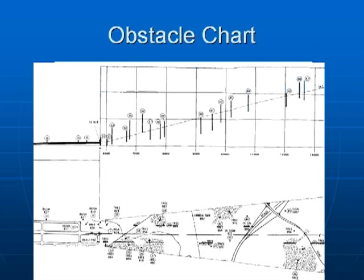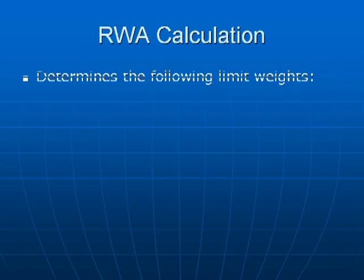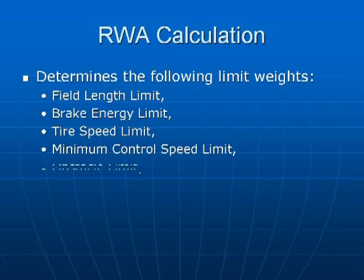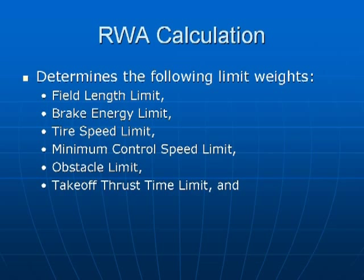The obstacle information and runway information discussed are just some of the sources constituting the database used in a runway analysis. Once the aircraft performance is collected and put into our performance program and the airport and runway information is inserted in the database, we're able to compute a runway analysis. The runway analysis calculation determines the following limit weights: field length limits, brake energy limit, tire speed limit, minimum control speed limit, obstacle limit, takeoff thrust time limit, and climb limit or WAT limit weights.